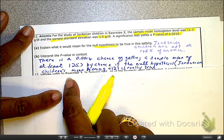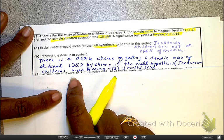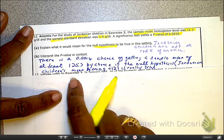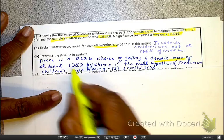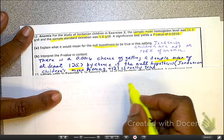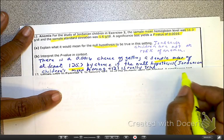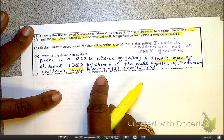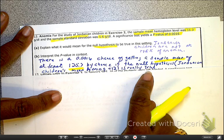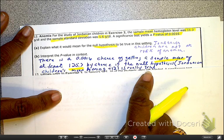So as we continue looking at the idea of the probability value in context, and they should say interpretation, there is a 0.0016 chance of getting a sample mean of at least 125 by chance if the null hypothesis, which is the mean hemoglobin for the Jordanian children, if that is true.